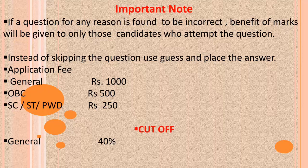For cutoff: the General category cutoff is 40% and for others it is 35%. However, remember that this is a competitive examination, so you need to score higher marks. Do not depend on the cutoff.